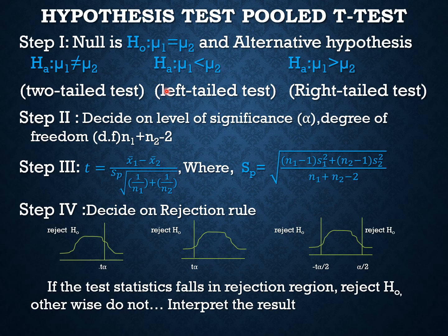For the hypothesis test pooled t-test, we have two types of population. The null hypothesis is mu1 equals mu2. In the alternative hypothesis: for a two-tail test we use the inequality sign, for a left-tail test we use the less-than sign, and for a right-tail test we use the greater-than sign.